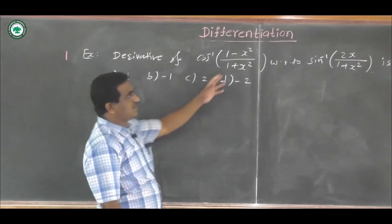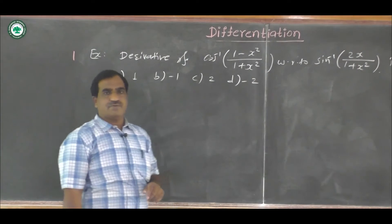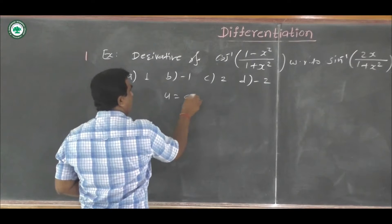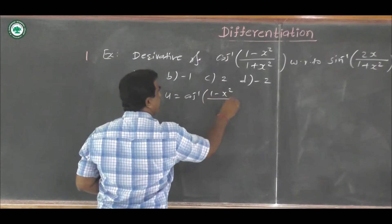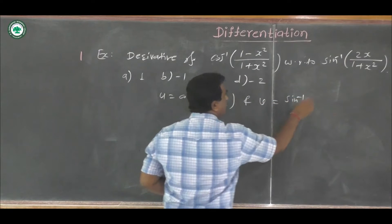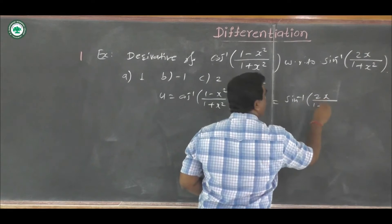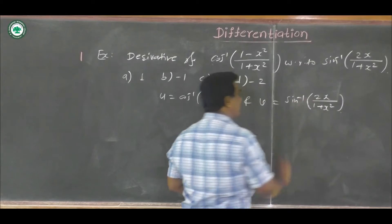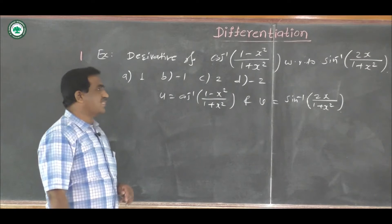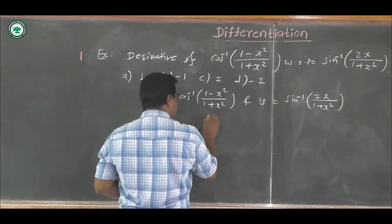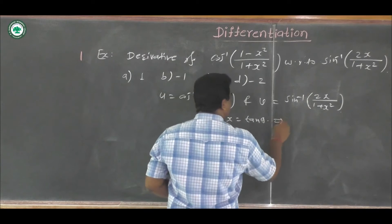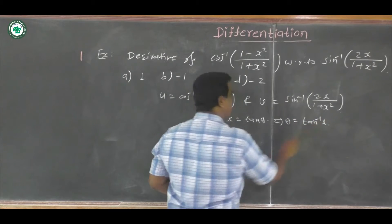For that purpose, we have to solve this using the method of derivative of one function with respect to another function. We can say the first term as u: cos inverse of (1 minus x square upon 1 plus x square), and the second term as v: sin inverse of (2x upon 1 plus x square). Now we have to use the substitution method first — put x equal to tan theta, which implies theta equals tan inverse of x.